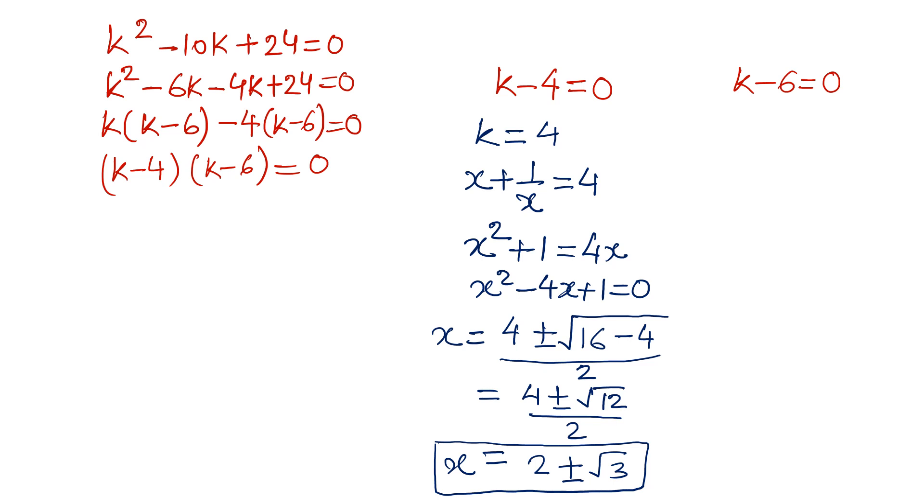Now let us take k minus 6 is equal to 0. So that means k is equal to 6. x plus 1 over x is equal to 6. x square minus 6x plus 1 is equal to 0. Apply the formula, minus b, 6 plus minus under the root 36 minus 4 over 2a so 2. 6 plus minus this will be square root 32, that means 16 times 2, so it will be 4 root 2, so 3 plus minus 2 root 2.